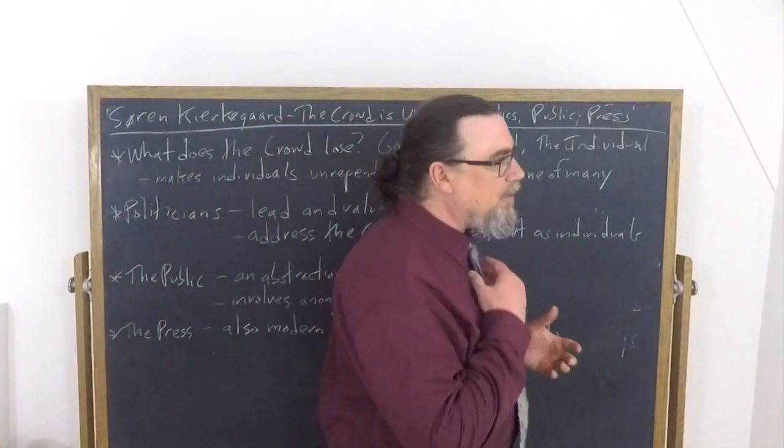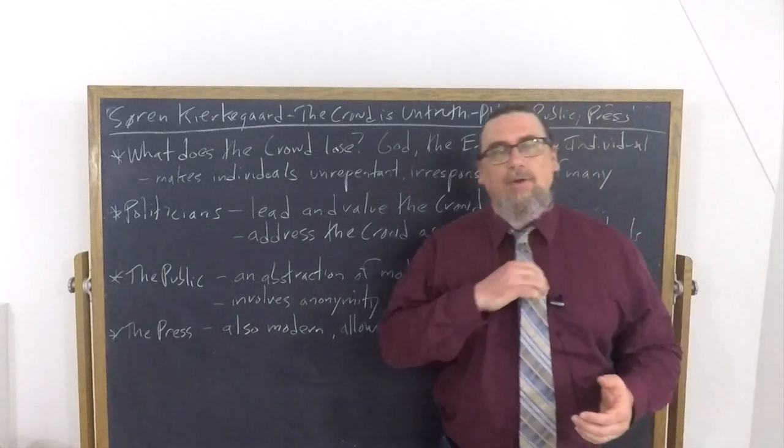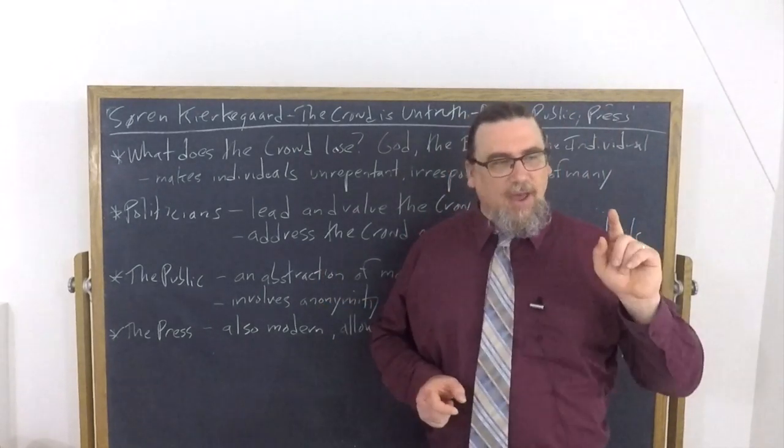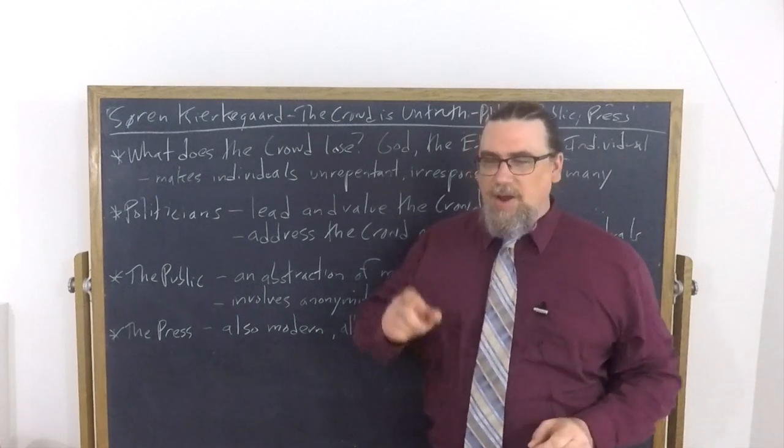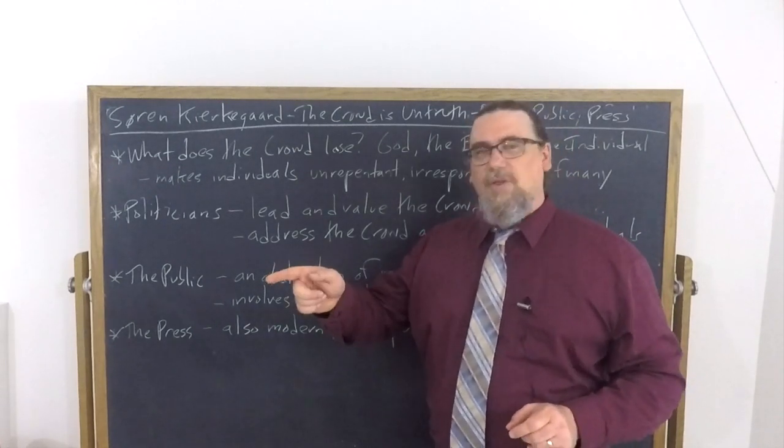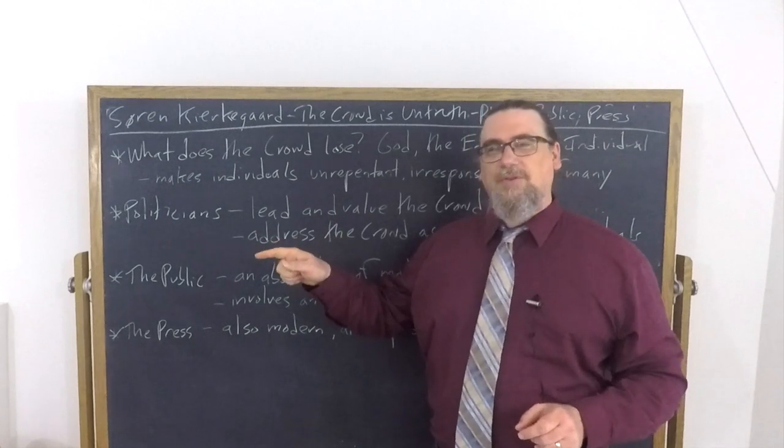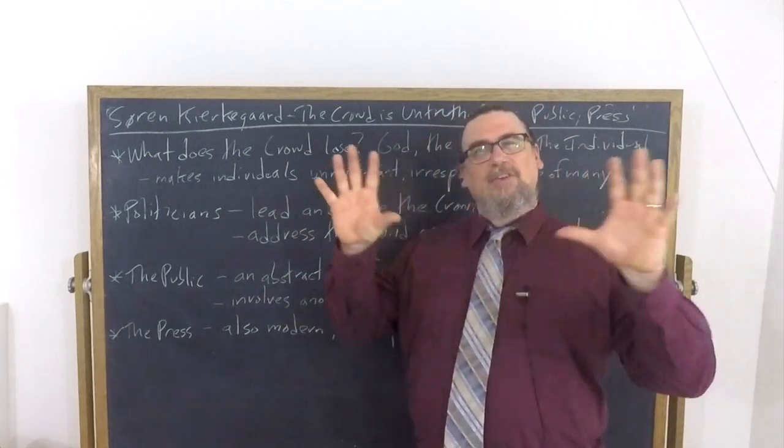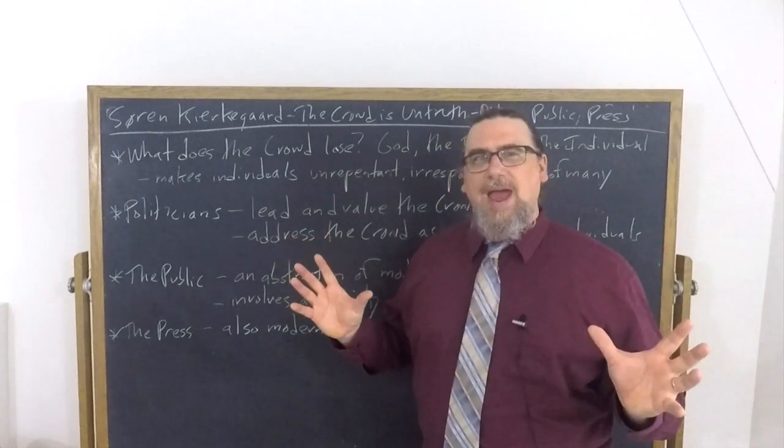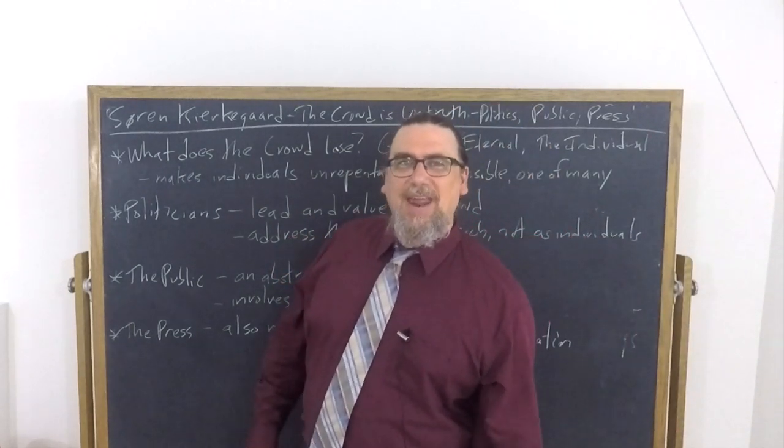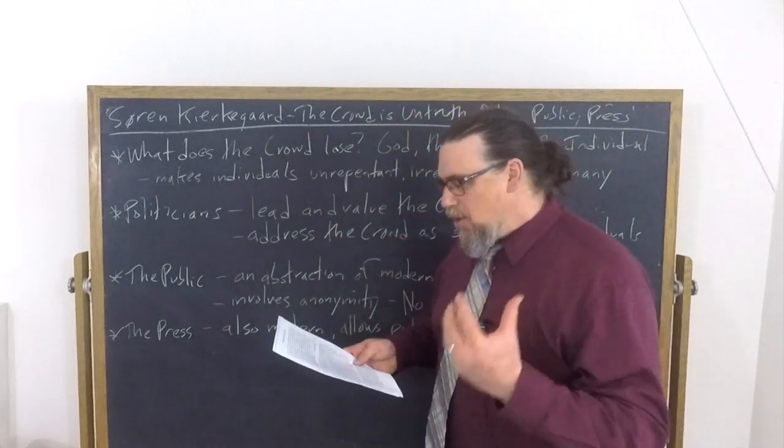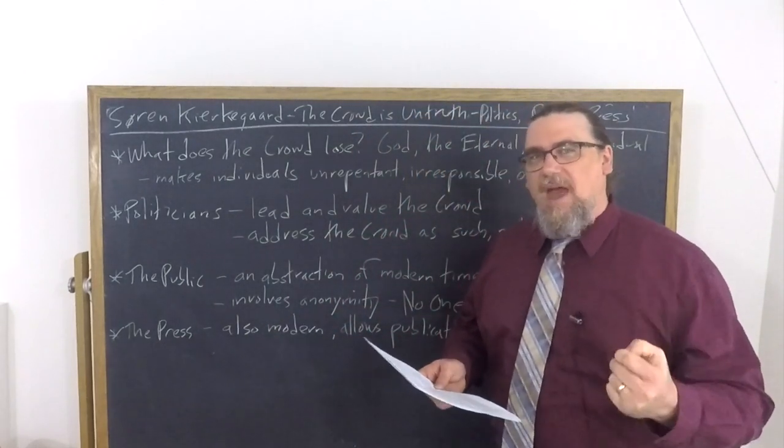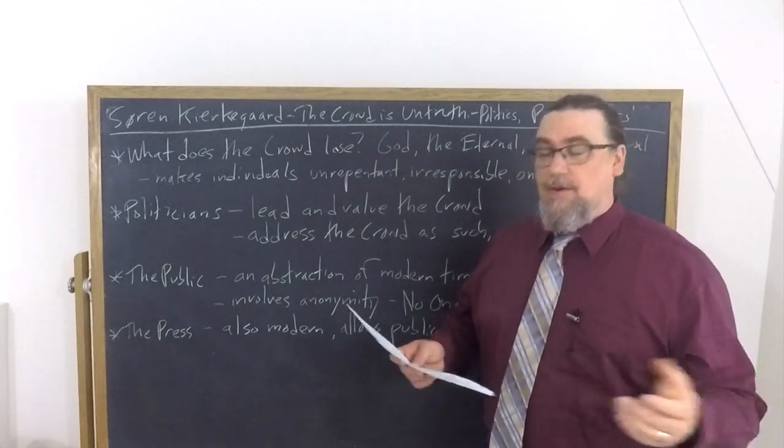He says that it's an abstraction. It's a crowd, but it's not a crowd of individuals that you can identify and say, ah, that's the guy from down the street, that's the guy from the town over there, there's my professor, there's my grocer. Instead, the public is this amorphous abstract, not quite entity. You can't even say that it has true being or existence, but it exerts an important effect within modern societies.